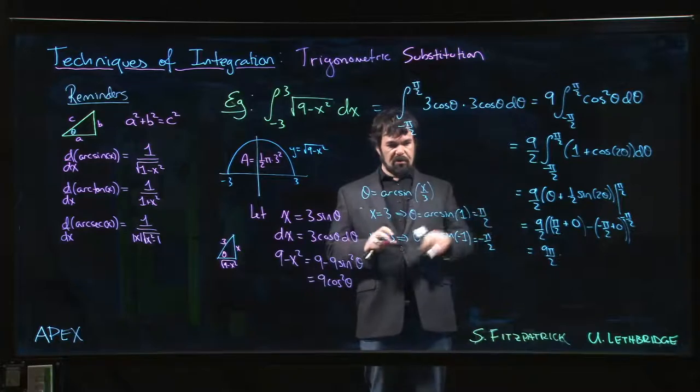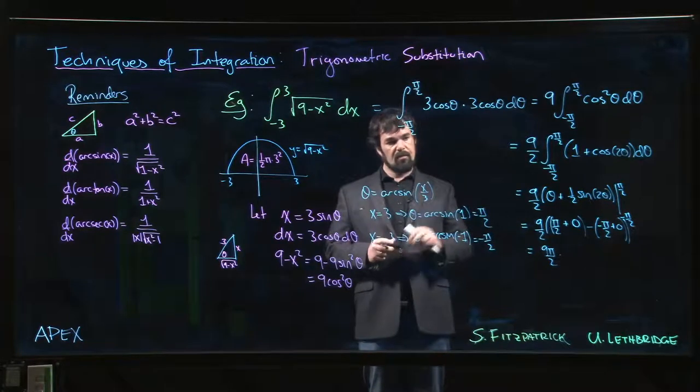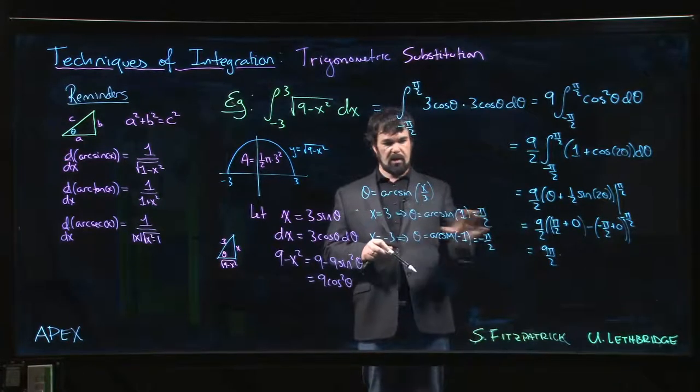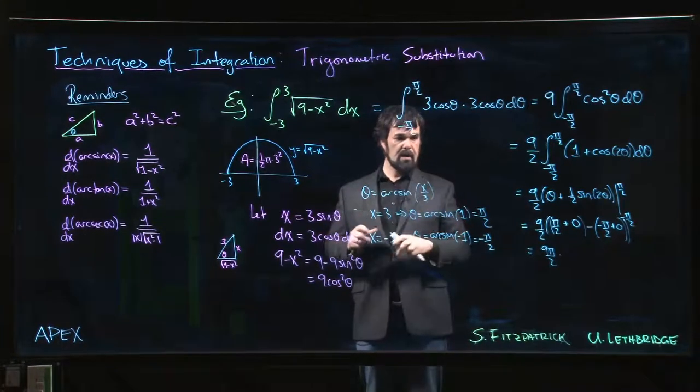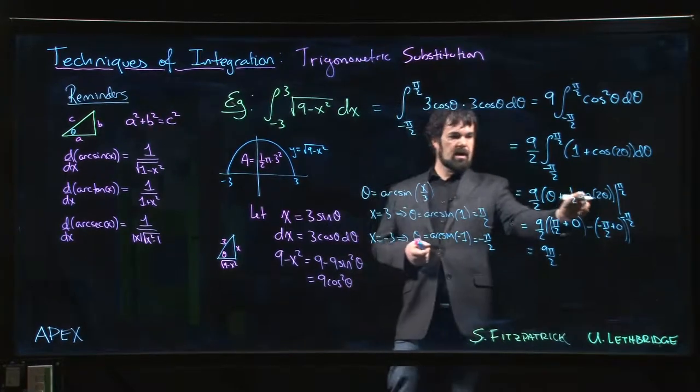Now, if we hadn't bothered to change the limits, we'd have a little bit more work on our hands. Now, by the way, we got the right answer. Yeah, 9 pi over 2. We're happy about that.